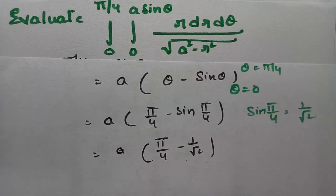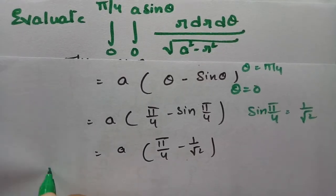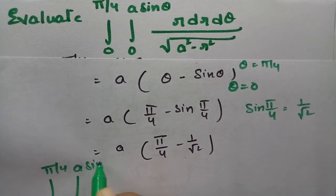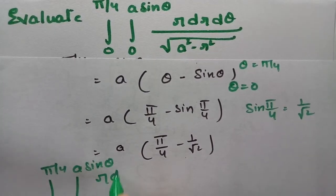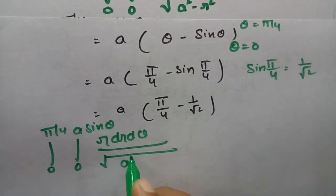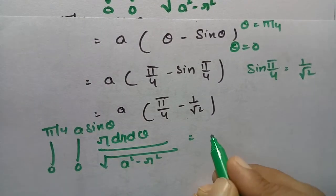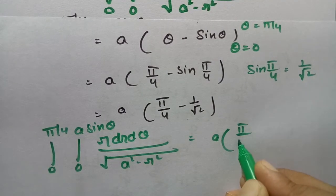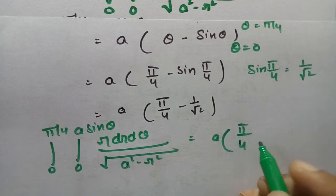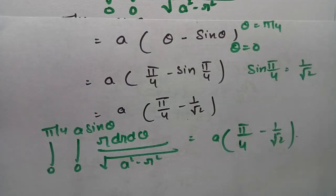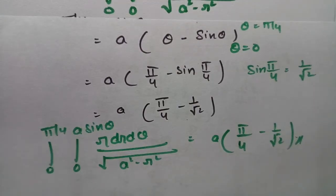So what is the double integral here? That is integral 0 to pi by 4, integral 0 to a sin theta, r dr d theta by root over a squared minus r squared, value is nothing but a times pi by 4 minus 1 by root 2. This is how we have to solve. This is the final value. First of all we have to integrate with respect to r and later with respect to theta.